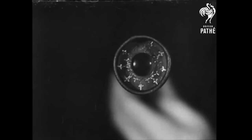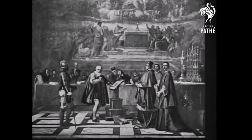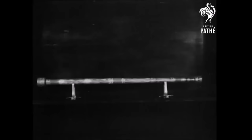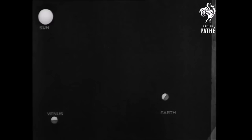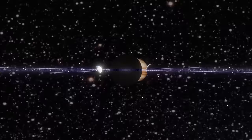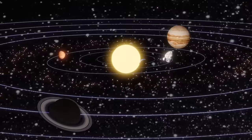It wasn't until the early 17th century that Galileo Galilei, an Italian scientist, brought the universe into sharper focus. Using a telescope he constructed, he observed the moons of Jupiter, the phases of Venus, and the mountains and craters on the moon. These observations supported the heliocentric model and challenged the geocentric view. But his findings faced opposition from the Catholic Church, leading to his trial and house arrest.